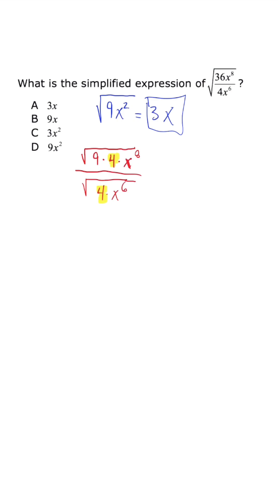what we would have when we simplify would be 3 times 2 times x to the fourth all over 2 times x to the third. Now, when we simplify, twos cancel out, we're left with 3, and then x to the fourth minus x to the third is just going to be x. So this is why we get the answer.